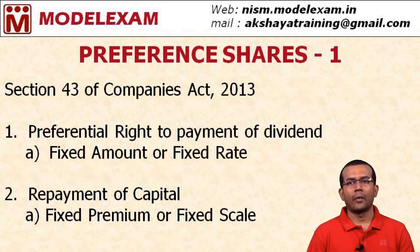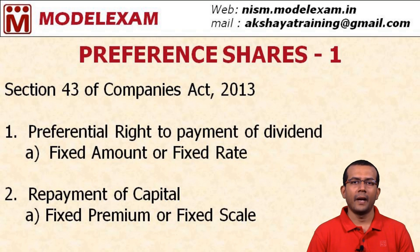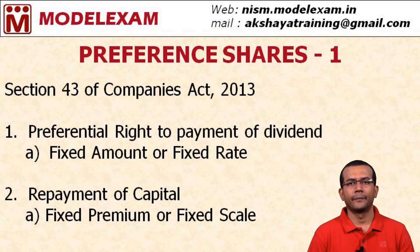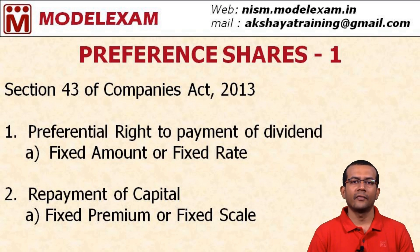The second preferential right is about repayment of capital. On the event of the liquidation of the company, preference shareholders are paid a fixed premium over and above the face value, or they are paid a premium on a fixed scale — which could be a percentage on the face value, such as 100% or 200%. So preference shareholders will be given special treatment in the case of dividend or in the case of repayment of capital.